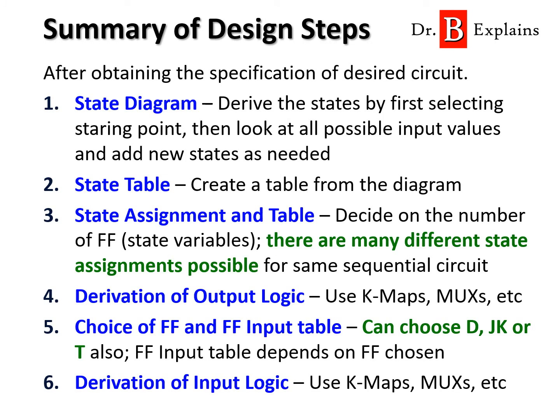We start by understanding the behavior of the physical system and the specifications for the FSM that we wish to design. Once that is clear, we start by drawing a diagram representing the function of the FSM. We derive these states by first selecting a starting point, then we look at all the possible input values and add new states as needed. We then create a state table from the diagram. In step 3, we decide the number of flip-flops that we will be using, then we assign the state values to each of the states in our diagram. We can then create a state assigned table. There are many different state assignments possible for the same sequential circuit.